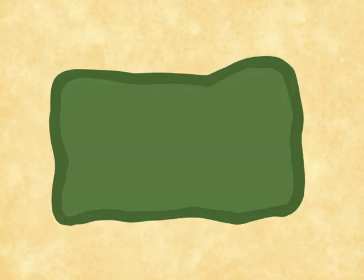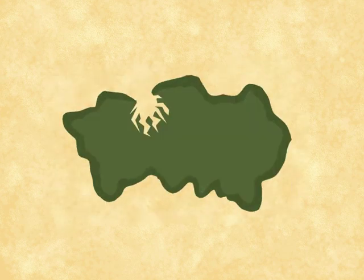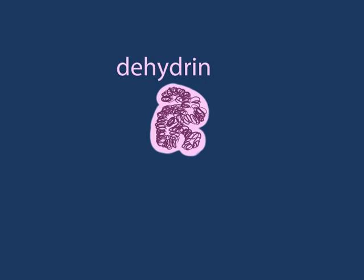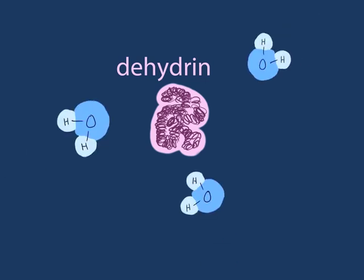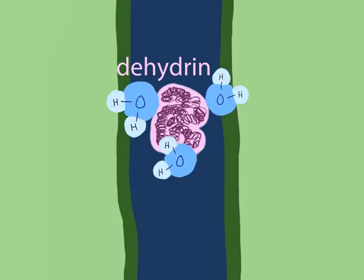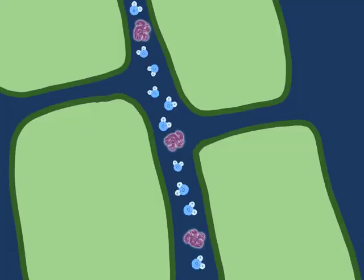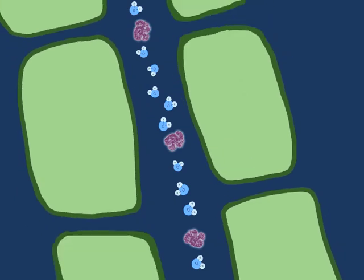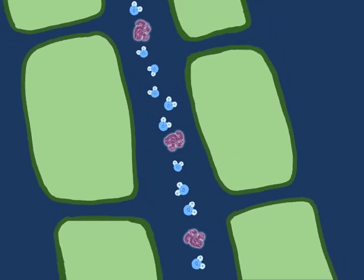Because desiccation can cause severe deformation of cells, potentially leading to rupture, the resurrection fern has a special mechanism to cope with this. The plant synthesizes proteins called dehydrins, which attract water to the spaces between cell walls, allowing cells to slide past each other during the dehydration process, rather than rupturing.